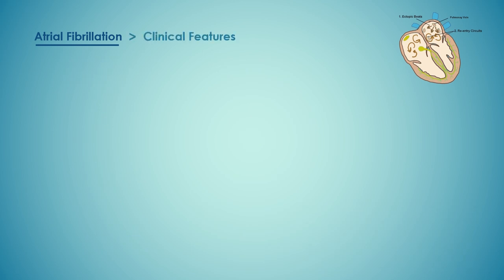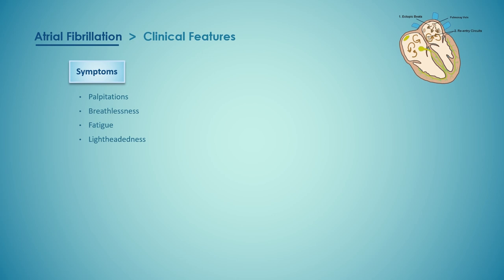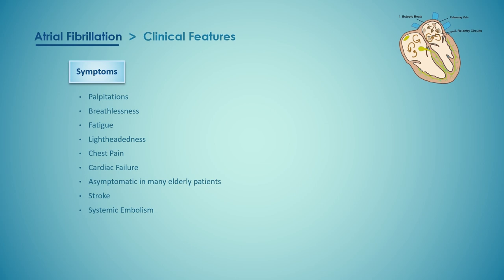The typical presentation is with palpitations, breathlessness, and fatigue. A fall in blood pressure may lead to lightheadedness due to compromised cerebral circulation, and chest pain may occur due to reduced coronary perfusion, especially on top of underlying coronary artery disease. In patients with poor ventricular function or valvular disease, AF may precipitate or aggravate cardiac failure due to loss of atrial function and heart rate control. In older patients AF may be asymptomatic, discovered only on routine examination or ECG. AF may also present with systemic embolism as a first presentation and is a major cause of stroke in the elderly.